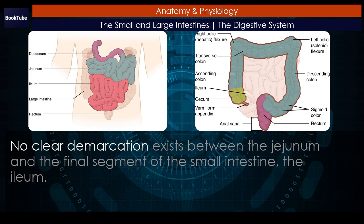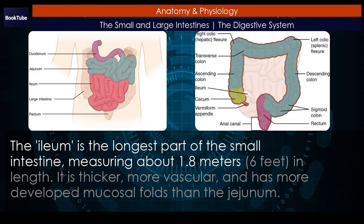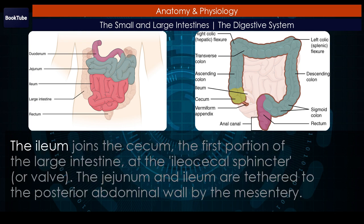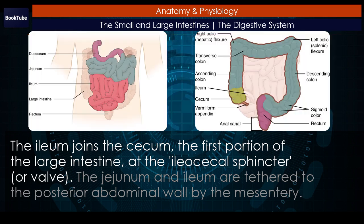No clear demarcation exists between the jejunum and the final segment of the small intestine, the ileum. The ileum is the longest part of the small intestine, measuring about 1.8 meters (6 feet) in length. It is thicker, more vascular, and has more developed mucosal folds than the jejunum. The ileum joins the cecum — the first portion of the large intestine — at the ileocecal sphincter or valve.